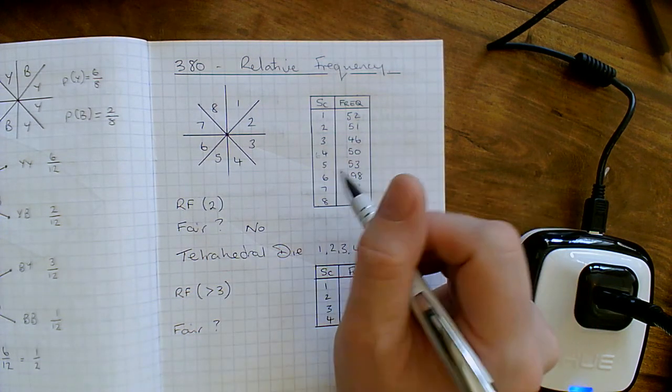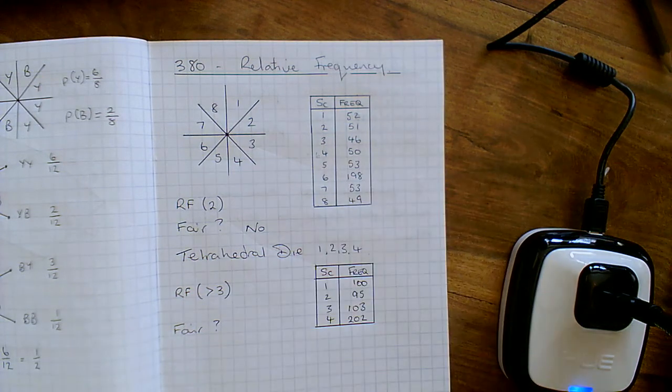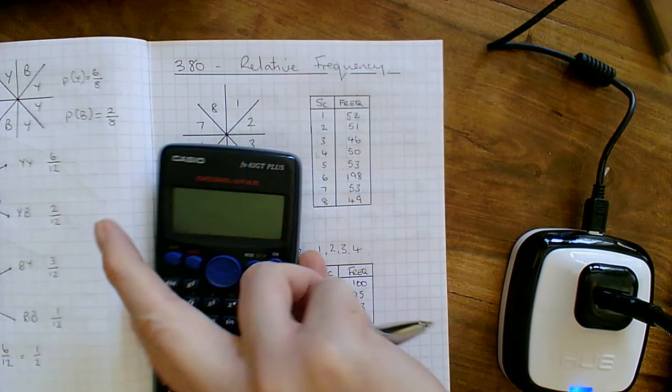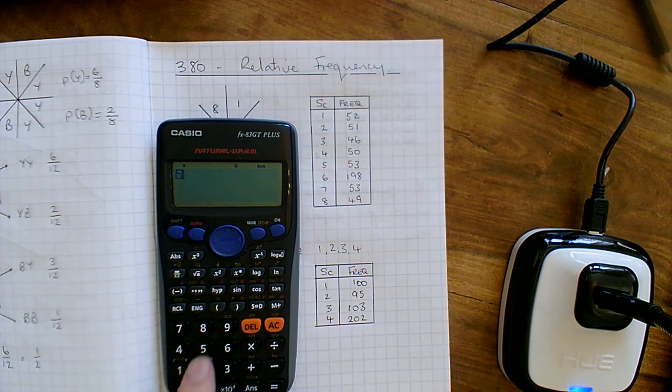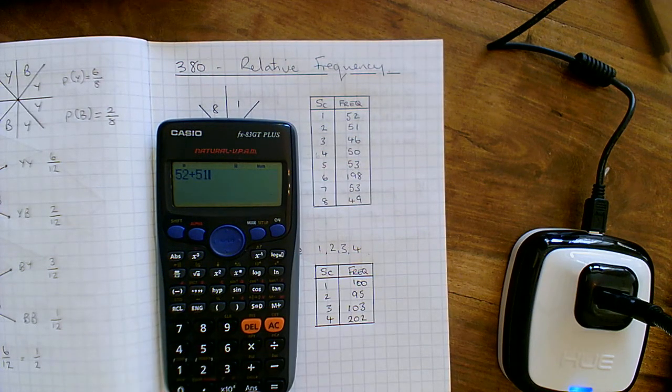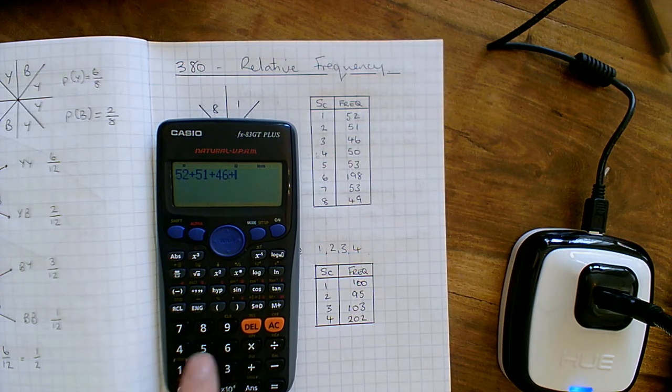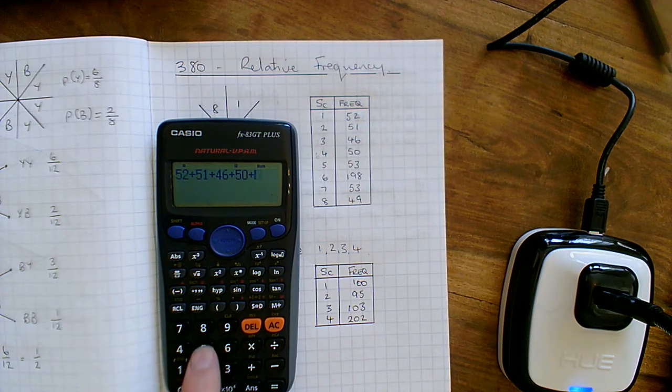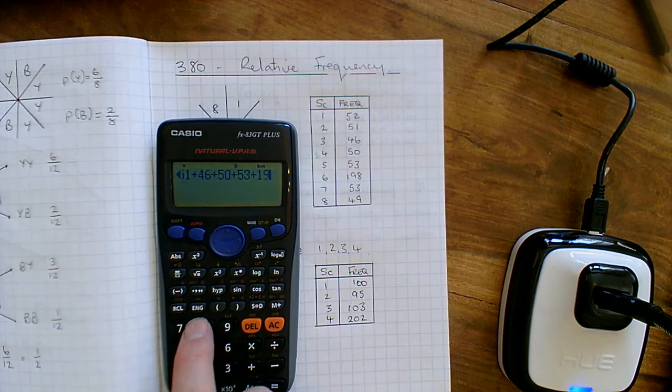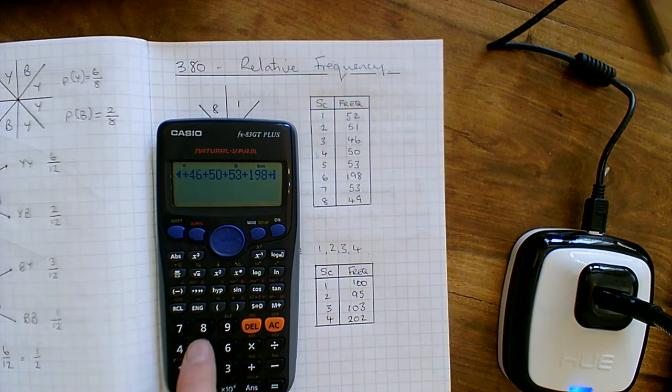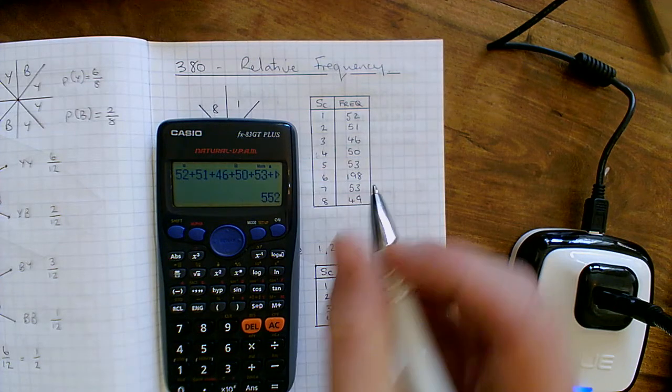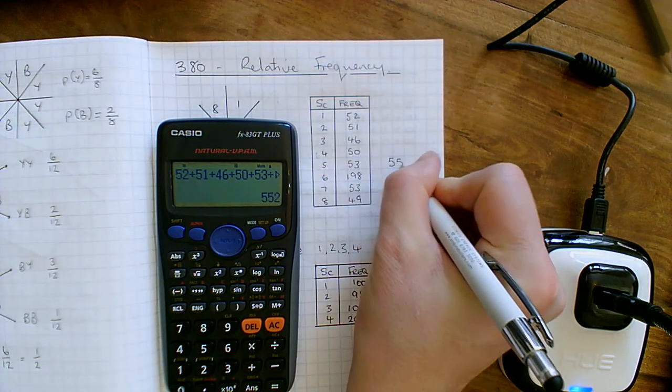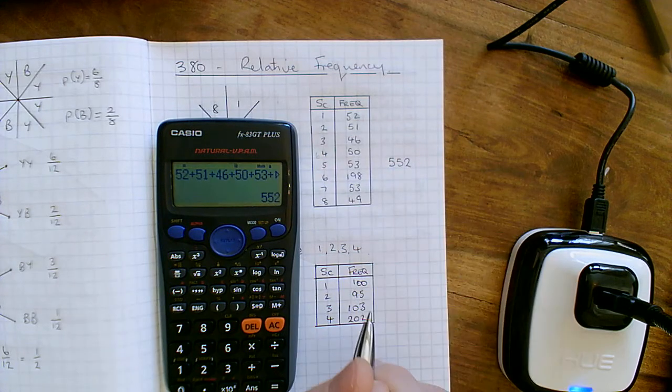Now the relative frequency, all you do to work with the relative frequency is first of all figure out how many experiments you've got all together. Now for that we're going to use a calculator. So I'll turn us on and then I've got 52 plus the 51 plus the 46 plus the 50 plus the 53 plus the 198 plus 53 plus 49. So what I can see straight away is there's 552 all together experiments.